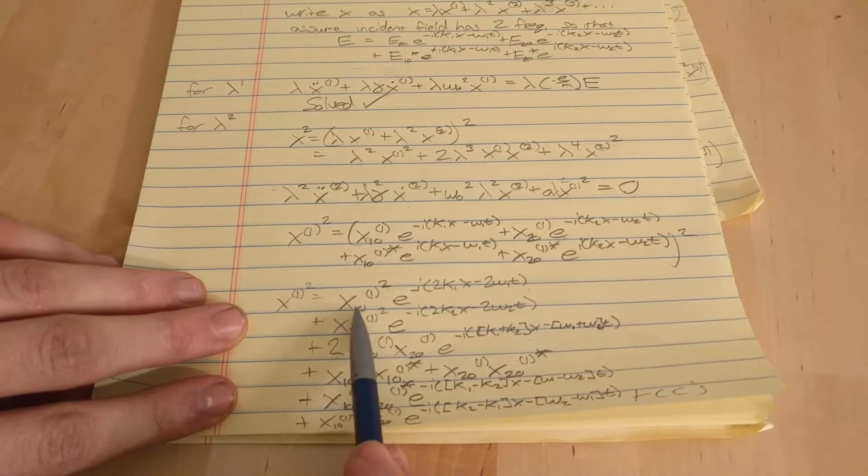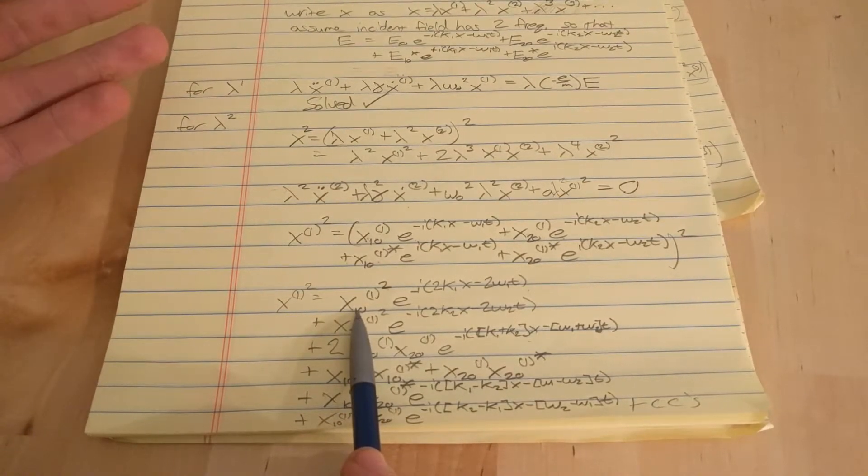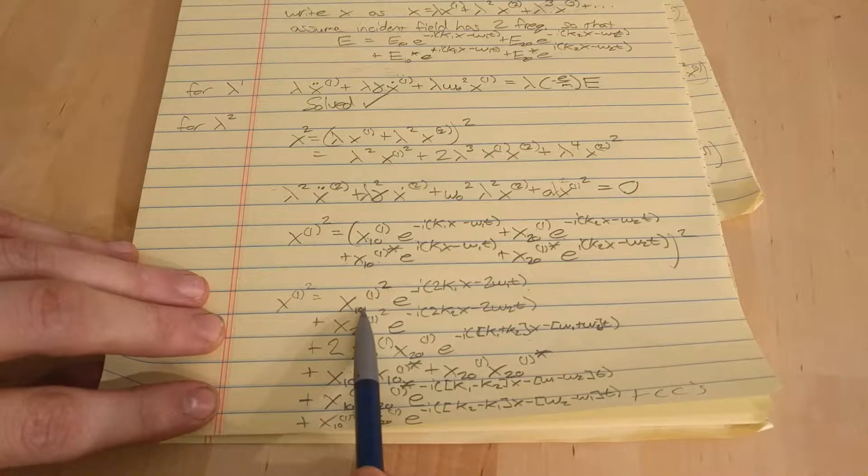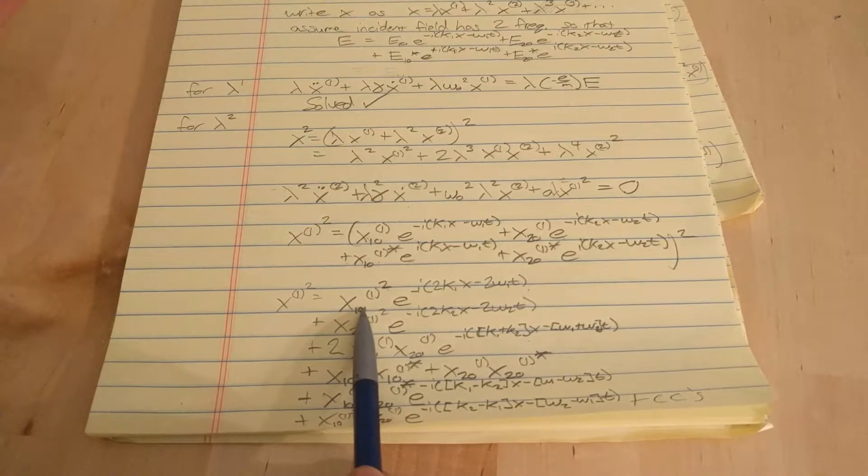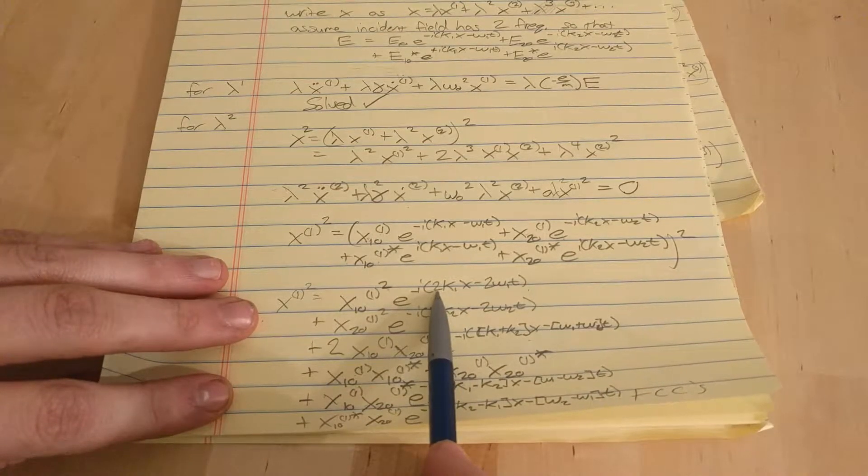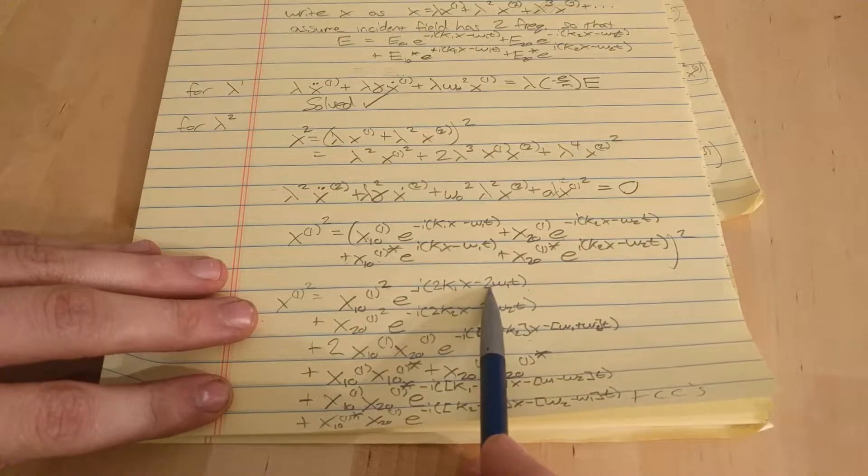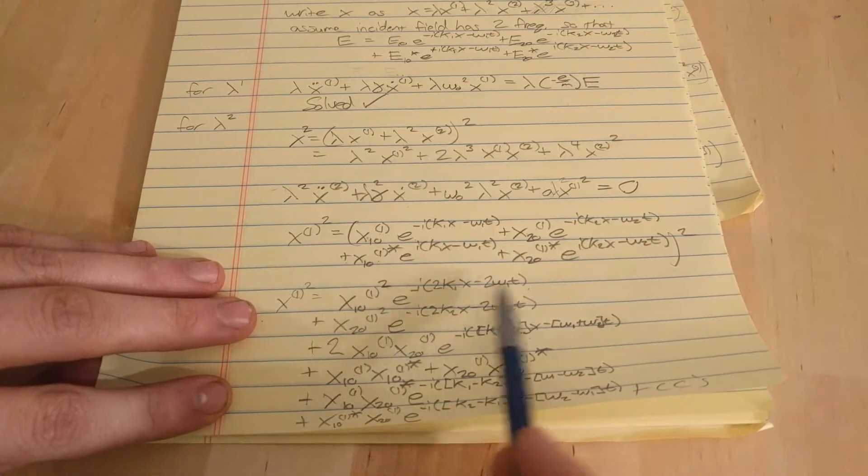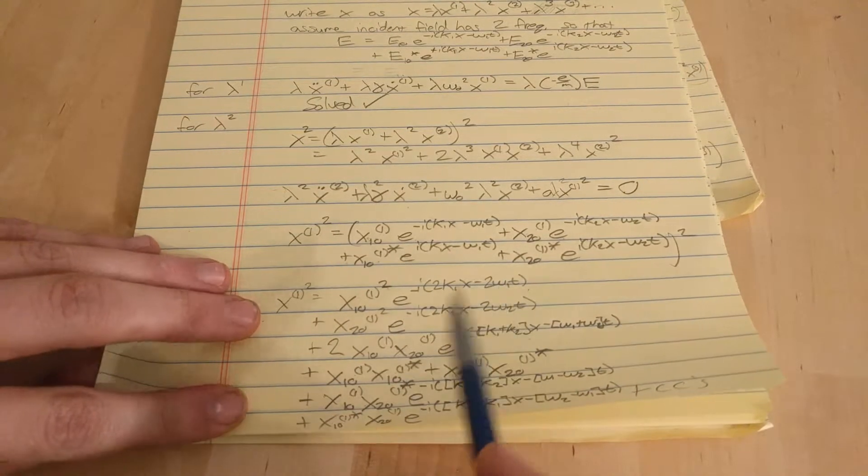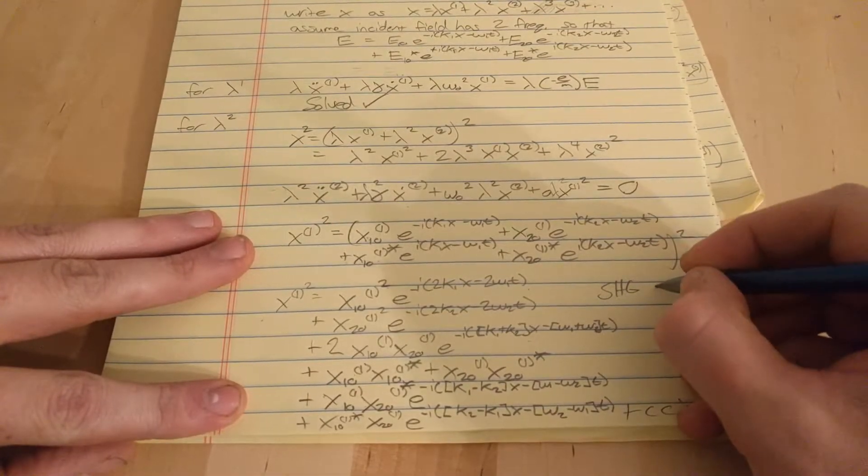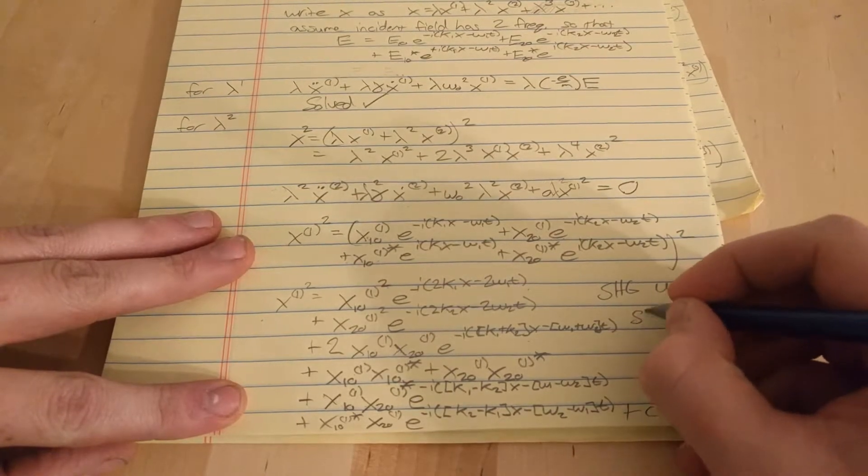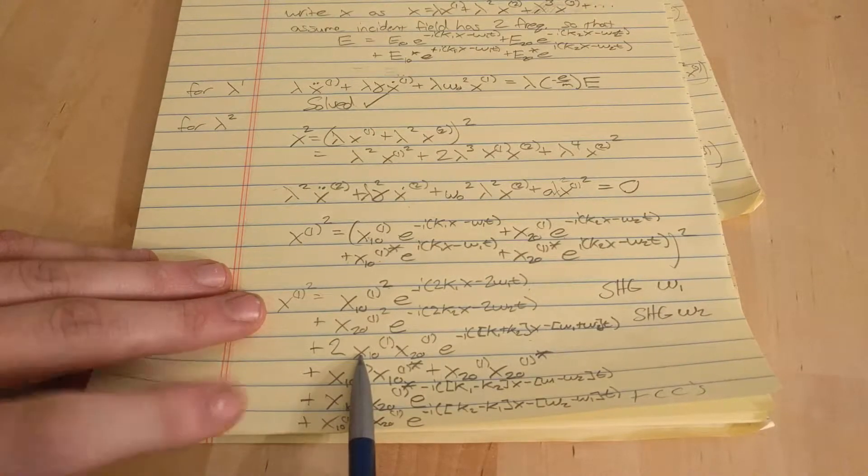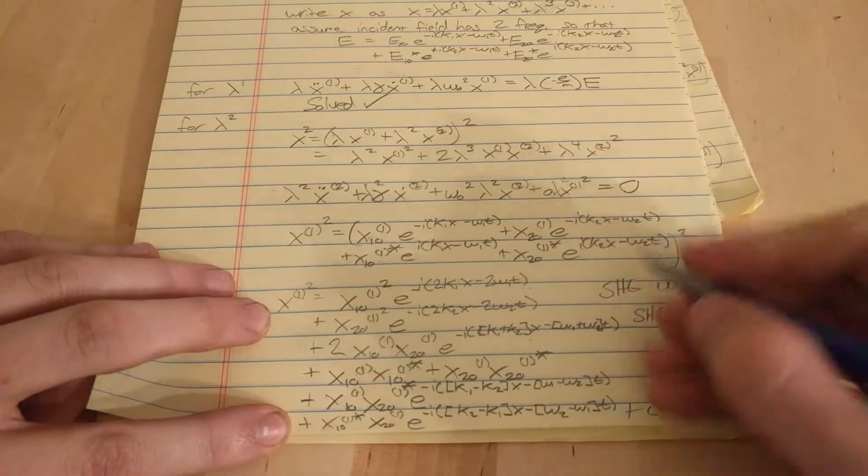Each of these terms is responsible for different nonlinear phenomenon. If you have two frequencies, this first term gives you a source of electromagnetic wave that has a wave vector of 2k1 and a frequency of 2ω1, and that is called second harmonic generation. I'll refer to this term as the second harmonic generation of ω1, abbreviated SHG. Similarly, this would be the SHG of ω2, and this phenomenon is called sum frequency generation or SFG.